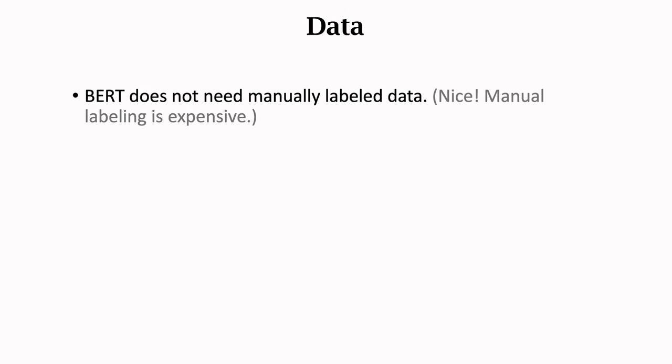BERT does not need manually labeled data. This is a huge advantage. Traditionally, high-quality data, for example, the translation from English to German, are expensive to prepare. It may cost over a million dollars to hire humans to build a large-scale and high-quality dataset. In contrast, BERT can use all the existing books and web documents as training data.